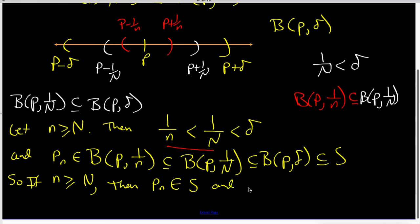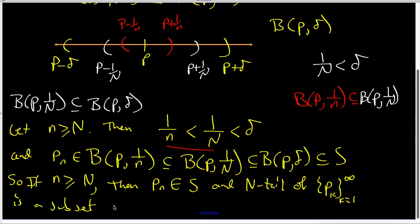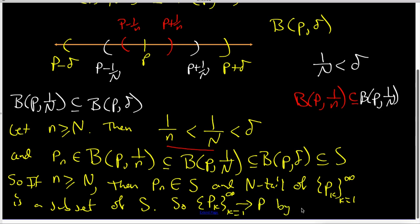What that says is that the nth term of the sequence is indeed a subset of the open interval S. And that says the sequence of pk's does converge to p by the definition of convergence. And that ends our proof.